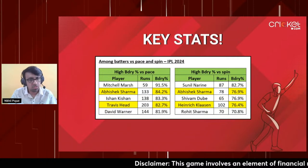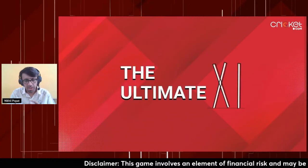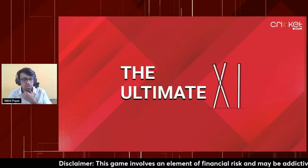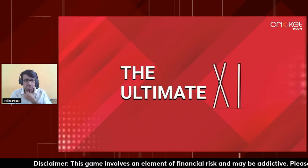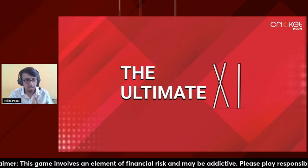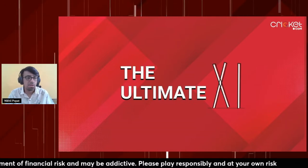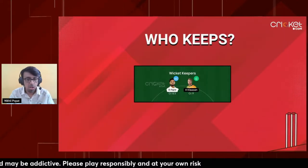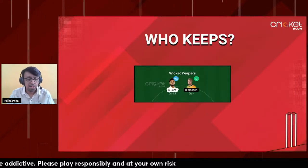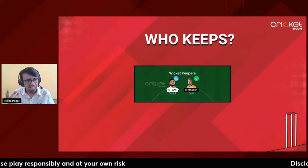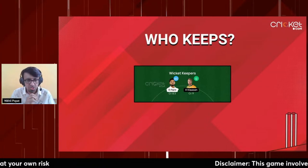Abhishek Sharma, Travis Head, and Warner if fit will definitely be in most teams. Let's move to the ultimate XI because the player-level data is common knowledge. For keepers in the ultimate XI: Klaasen and Rishabh Pant as captain/vice-captain is very straightforward - no risk actually, very high reward. Both are keeping, the ground is small, they're in-form batters.